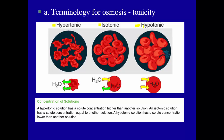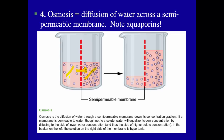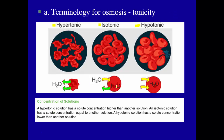This produces what's referred to as a crenation effect — that raisin-like appearance. On the other side, if the extracellular fluid the cells find themselves in is hypotonic, then by default their contents would be hypertonic. The hypotonic fluid is outside the cells; the inside is hypertonic by comparison. So the majority of fluid movement is going to be into the cell. Fluid moves into the cell and swells it up, which could be potentially dangerous.